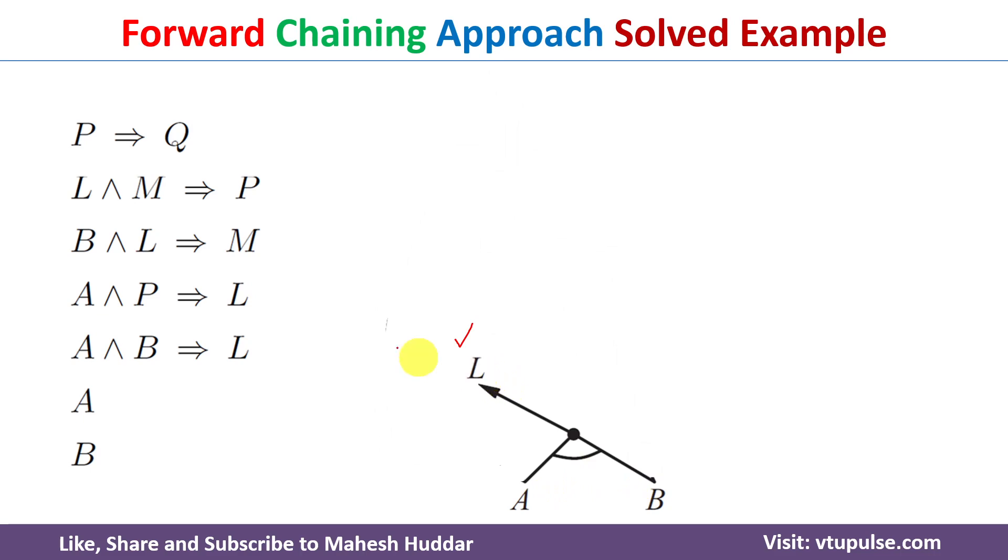Now we can take this rule, that is B and L. B is true, we know that. L is true, that is also known to us. Because both the premises of this rule are true, we can conclude that the conclusion is also true, that is nothing but M in this case.